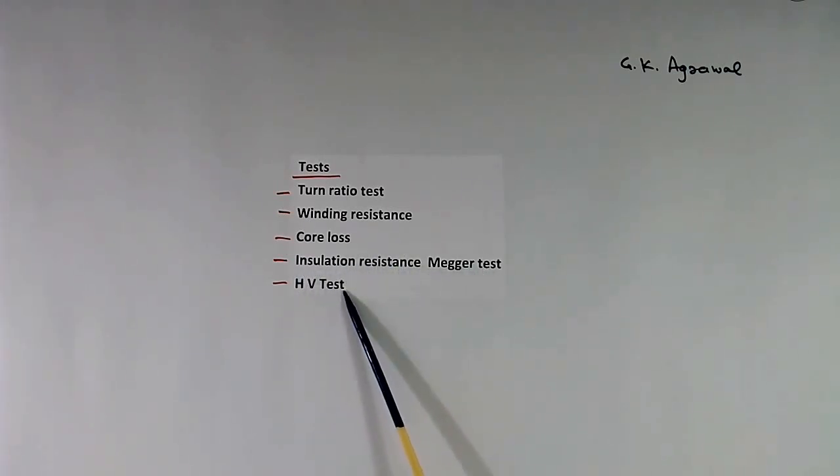This is high voltage test. In high voltage test, what we do, for short time, we will give high voltage. Say 3 KV for 1 minute. In this case, we measure the resistance of insulation, using a megger.